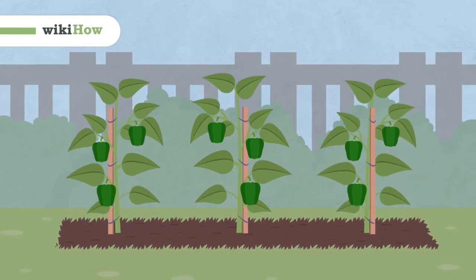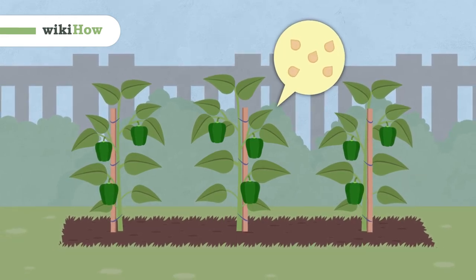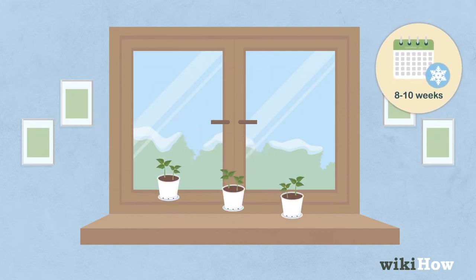To grow green bell peppers from seeds, plan to start the seeds indoors 8-10 weeks before the last frost in your area.